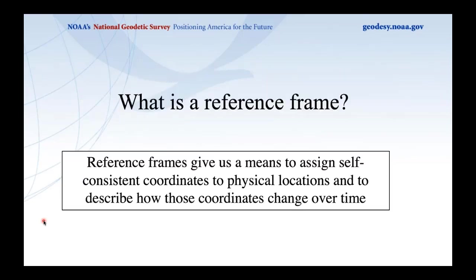So, what is a reference frame? A reference frame gives us a means to assign self-consistent coordinates to physical locations and describe how those coordinates change over time. My colleague Jerir Saleh put it well: when we talk about a reference frame, we're really talking about a set of axes in space. In three dimensions, we need three axes.